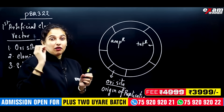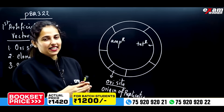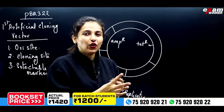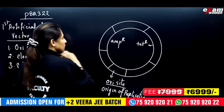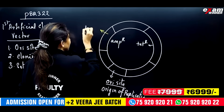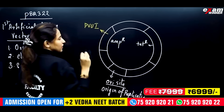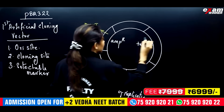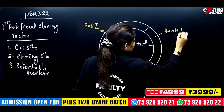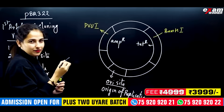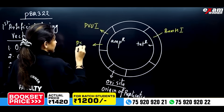We will learn the cloning sites or recognition sites. Now we will learn the oral restriction enzyme. We will learn PVU1. Then PVU, BAMH1, and PSSALMA — PST1.